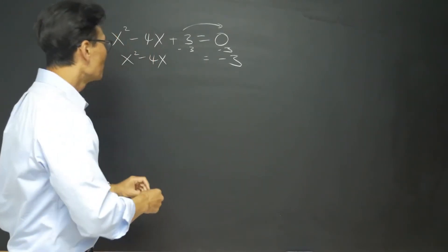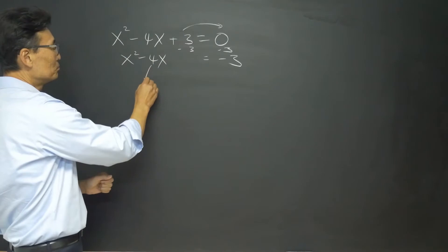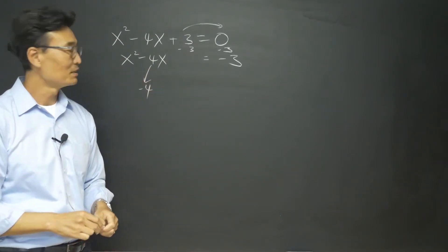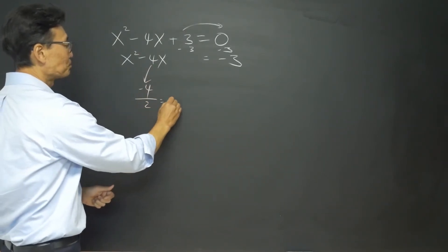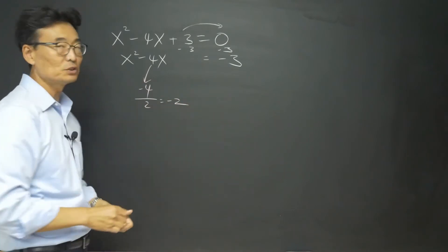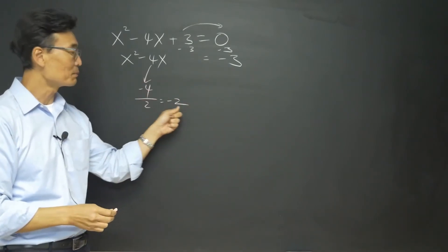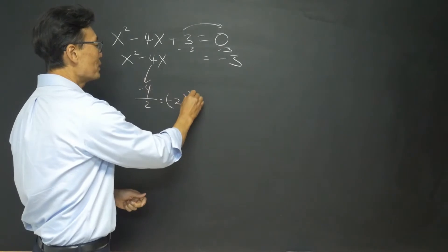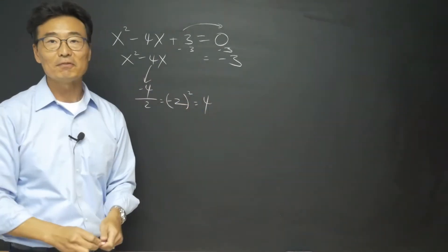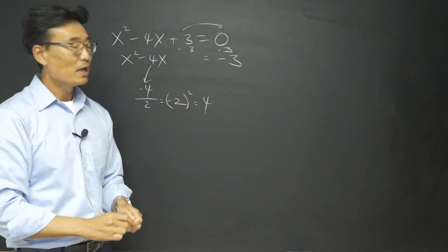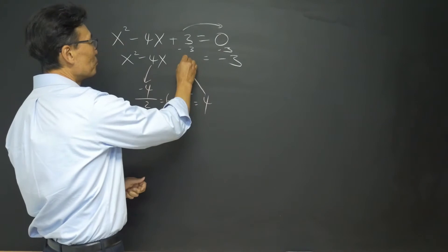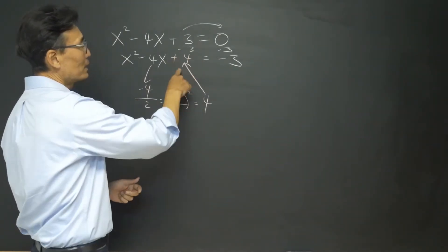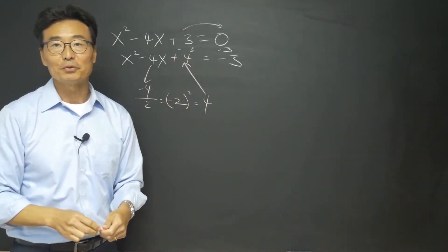What you want to do is take that number — negative 4, the coefficient of x — and divide it by 2. Negative 4 divided by 2 is negative 2. You square that, and we get 4. Now you take that number and write it in that little space that I've created.